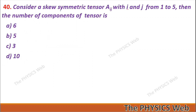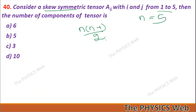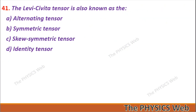Last question: Consider a skew-symmetric tensor A_ij with i and j running from 1 to 5. The number of independent components for a skew-symmetric tensor is n(n−1)/2. Here n = 5, so 5×4/2 = 10 — so your correct option is 10.